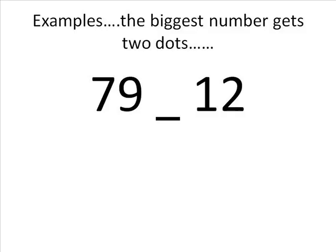Same here with this example of 79 and 12. Two dots next to the 79, one dot next to the 12, connect them together, and we get greater than. 79 is greater than 12.